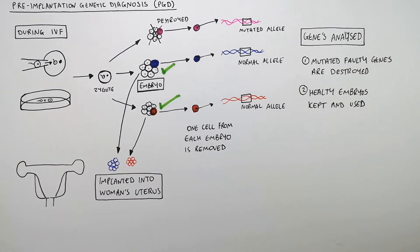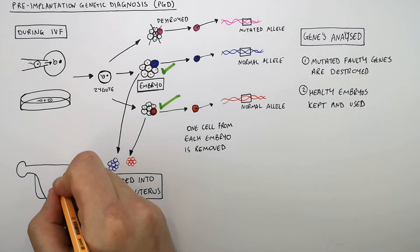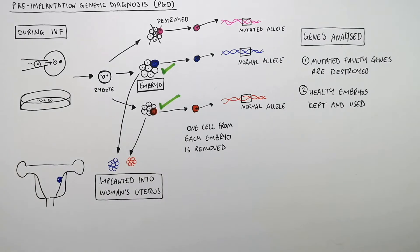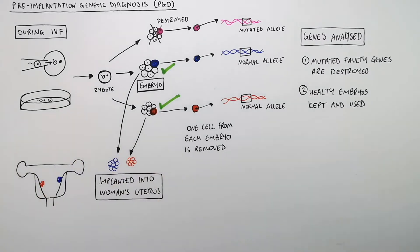So as you can see here, these two embryos without any genetic mutations are going to be transferred into the woman's uterus, and the baby will not have the inherited genetic disorder.